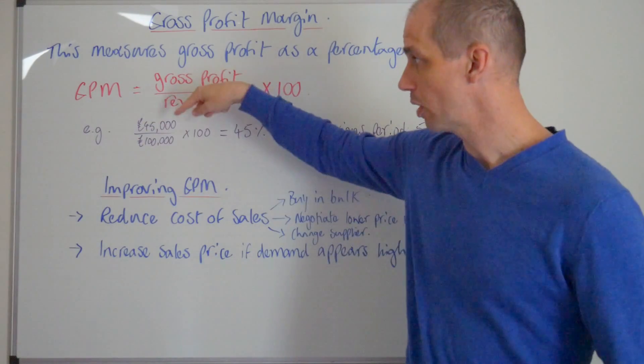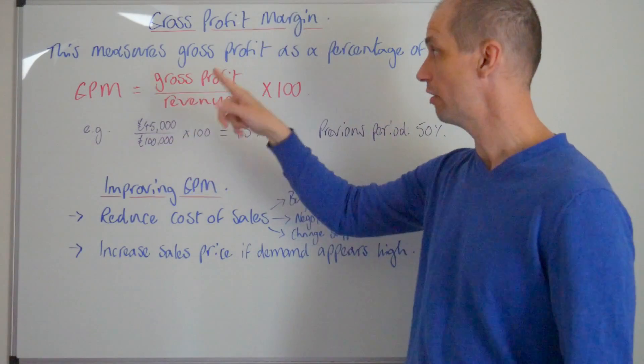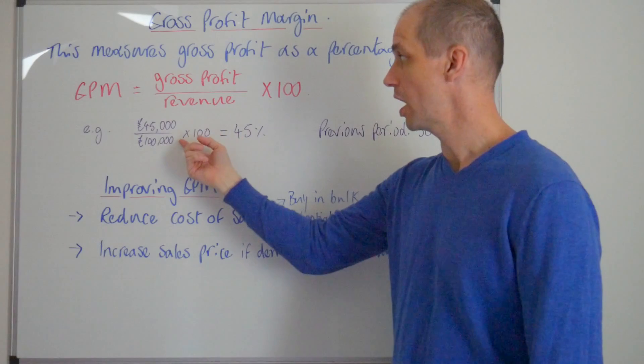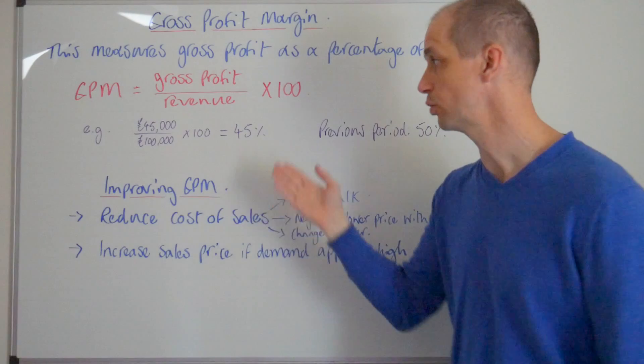We've got £45,000 of gross profit, we've got £100,000 of revenue into the business. We can multiply this by 100 and we can then see that that would equate to a 45% gross profit margin.